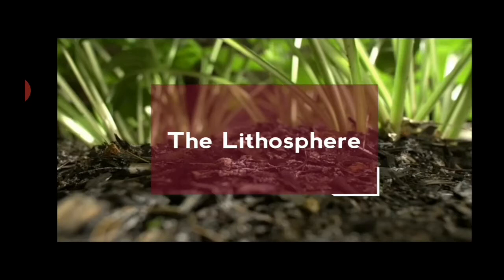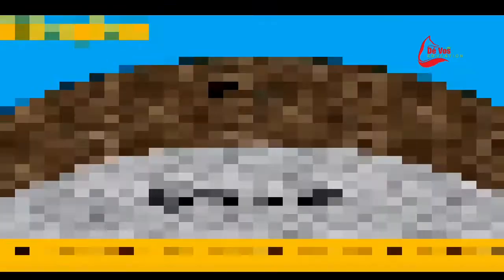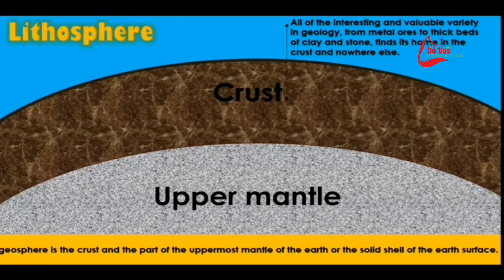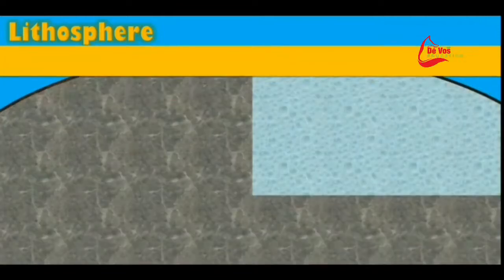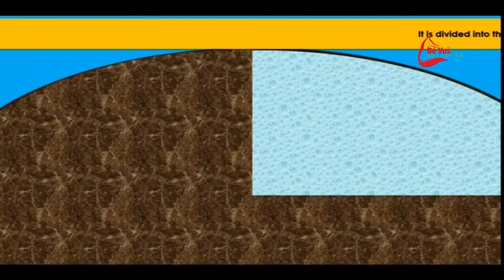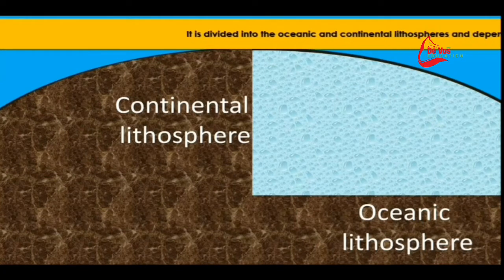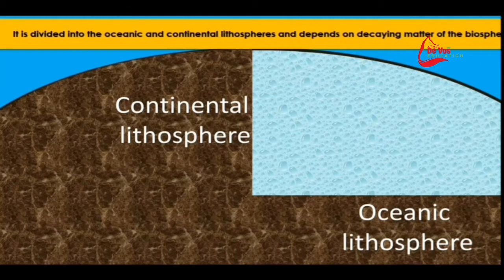Next, let's take a look at the lithosphere. The lithosphere is the crust and the upper part of the mantle of the Earth. All of the most interesting geology takes place in just this thin layer that covers the surface of the Earth. It's so thin that if we were to compare it to an apple, it's just the skin. It's divided into the oceanic and the continental lithospheres, and it depends on the decaying matter of the biosphere for its complete and total renewal.